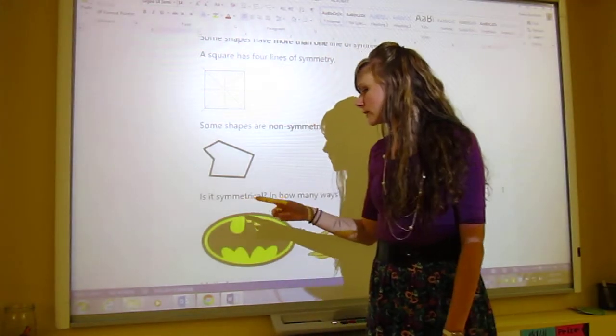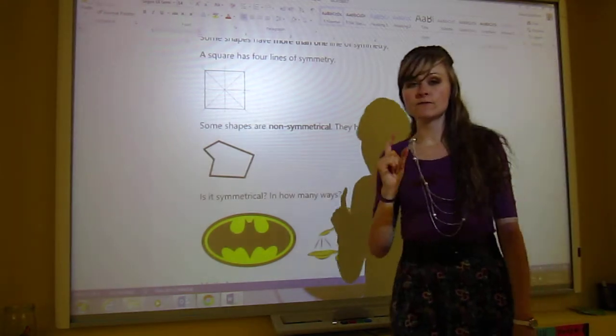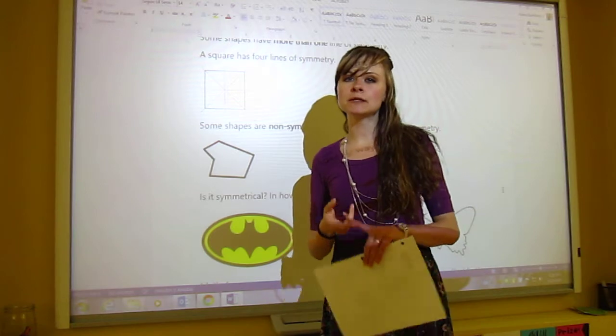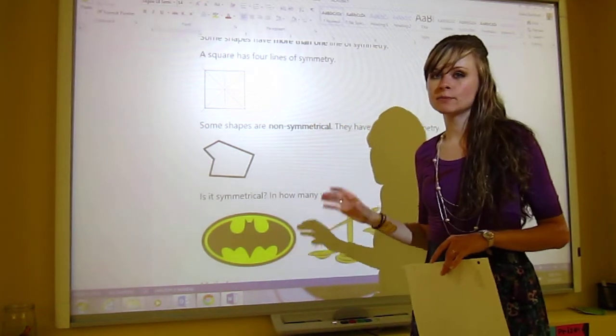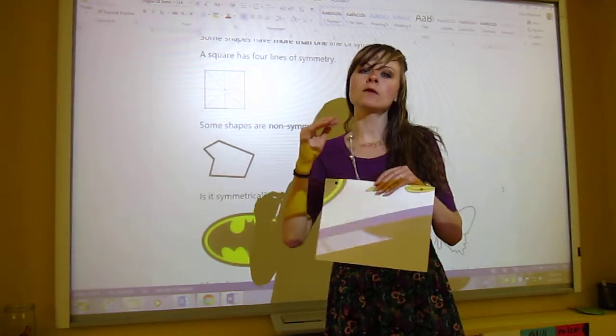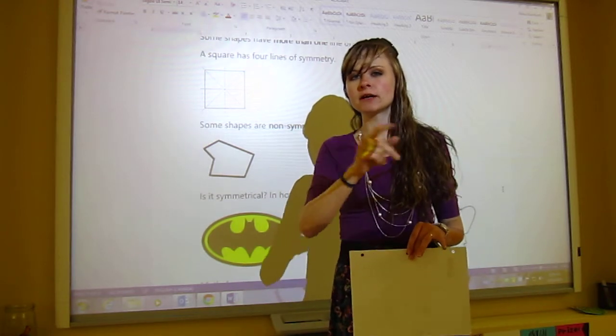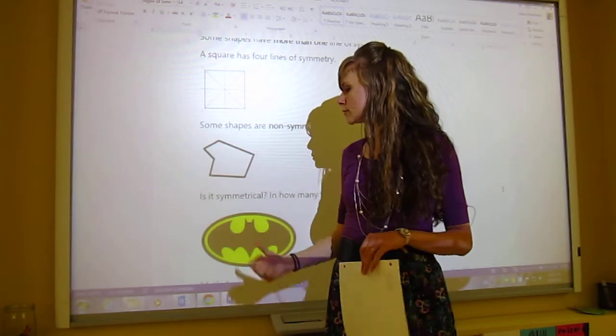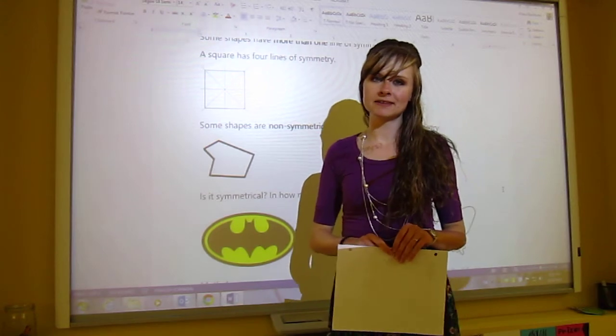So what you're going to do right now is you are going to determine on these three shapes right here, these practice ones, number one, if they are symmetrical. And if they are symmetrical, in how many ways are these images symmetrical? So not necessarily the object, but the actual image itself. So how it's drawn. Not if you move it, then it would be symmetrical. Just how it is. Is it symmetrical? So pause the video now and decide. Write down, draw the lines of symmetry on there, and then play the video again and we'll go through it.